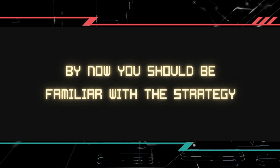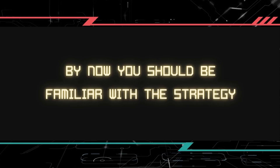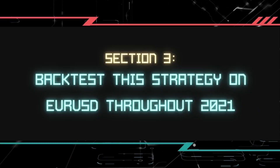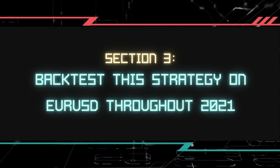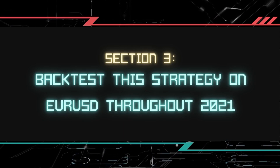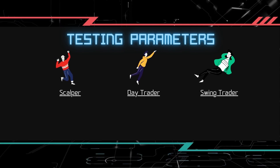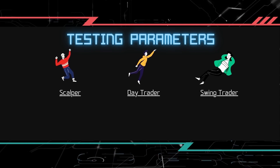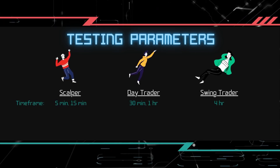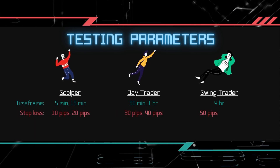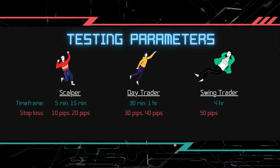By now you should be very familiar with our strategy. We have shown you how to use it on crypto, forex and stock market. Let us proceed with the backtest. In this section, we will backtest this strategy on the EURUSD using tick data from the whole of 2021. We have adapted our backtest settings to include 3 different trader profiles: scalpers, day traders and swing traders. The time frame for the backtest would be between 5 minutes to 4 hours. We would also test with different stop loss levels ranging from 10 pips to 50 pips with a 10-pip increment.